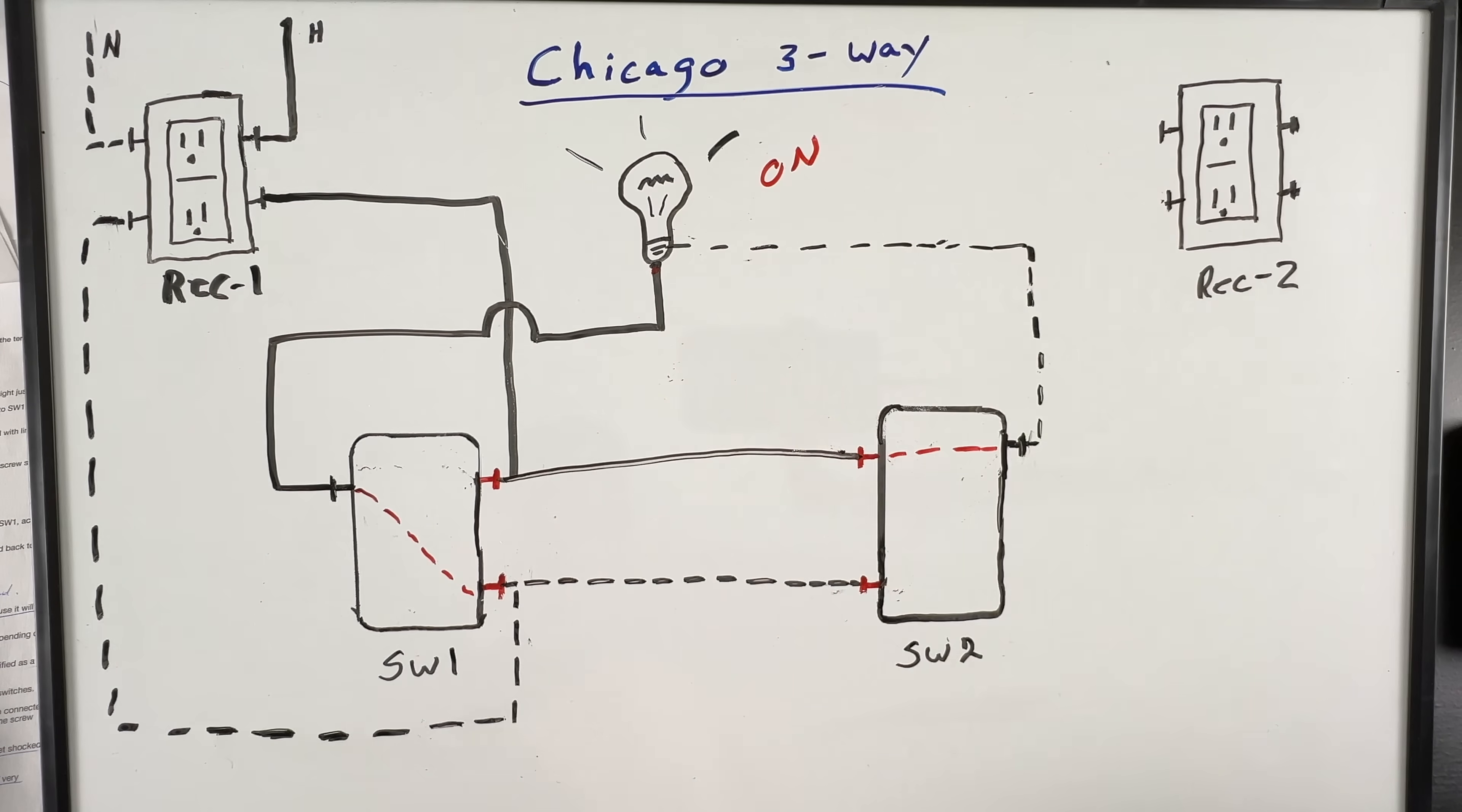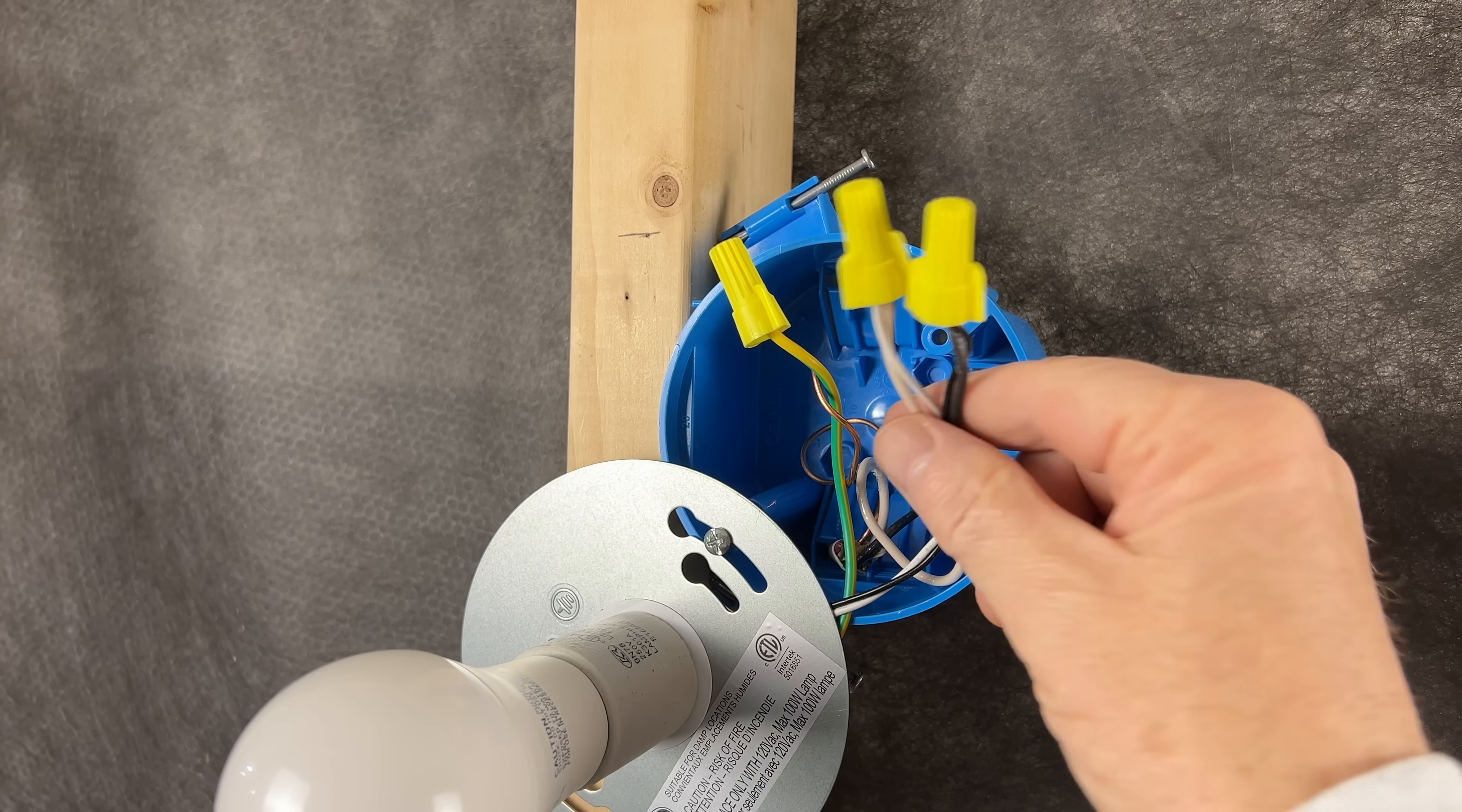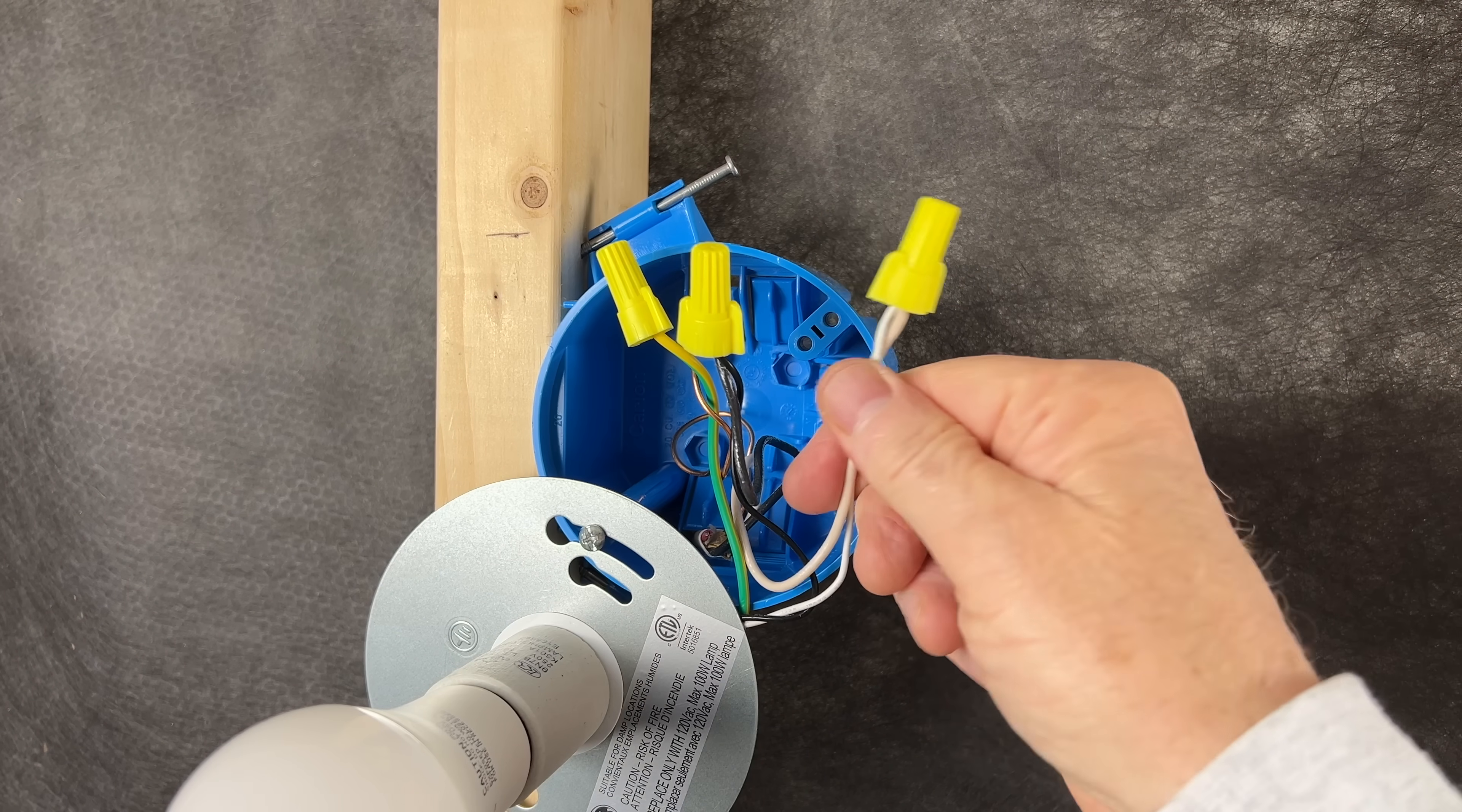There are four reasons why this Chicago three-way is dangerous. First, we're switching the neutral, which is not code compliant for lighting because it'll leave power at the fixture with the light switched off. Second, the energized wire switches between the white and the black wires depending on the position of the switch.